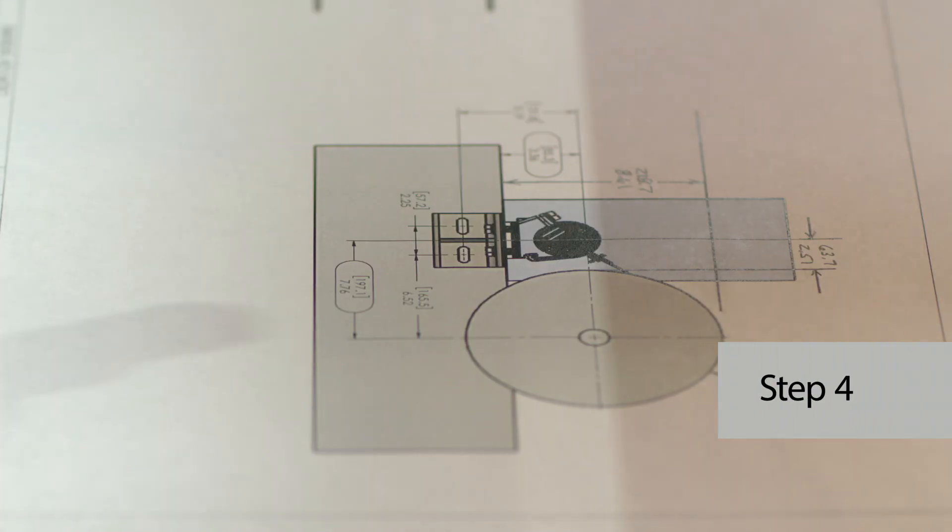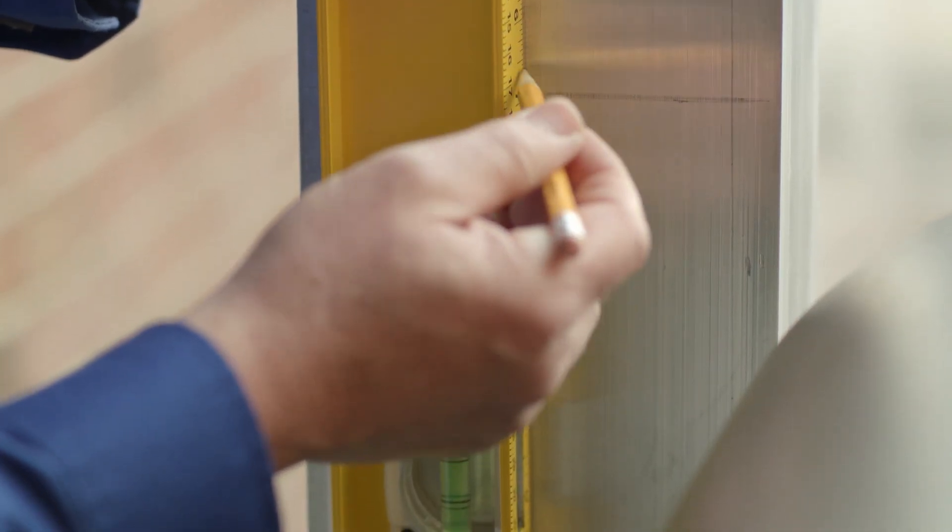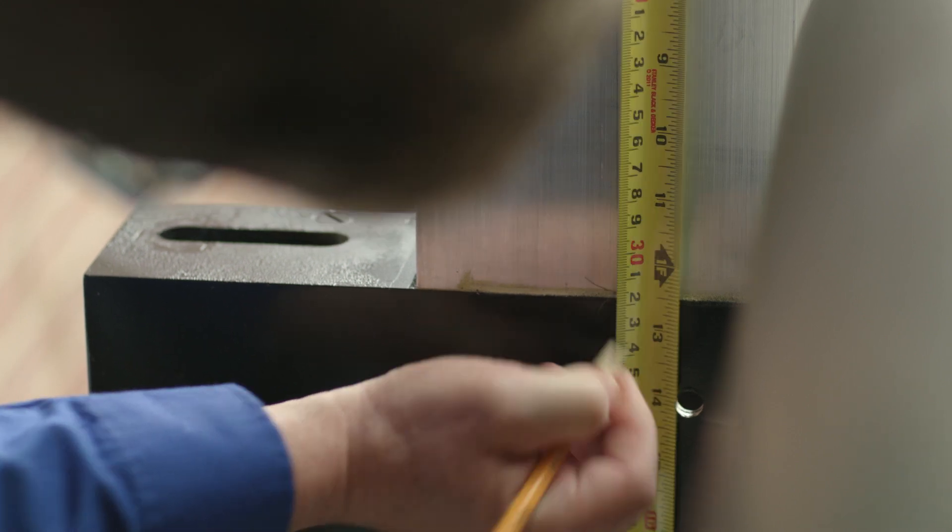Step four, refer to the installation drawing supplied with your Verilite to find the bracket location relative to the roll tangent lines you've just laid out. Scribe the bracket location onto the machine frame.